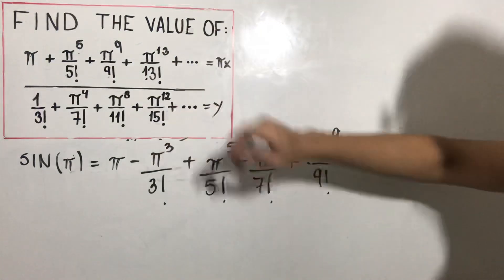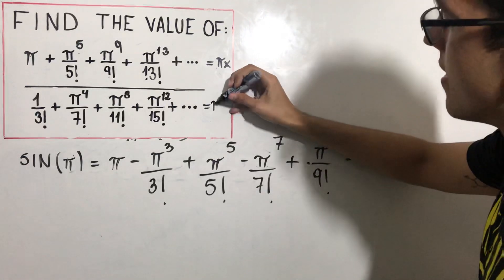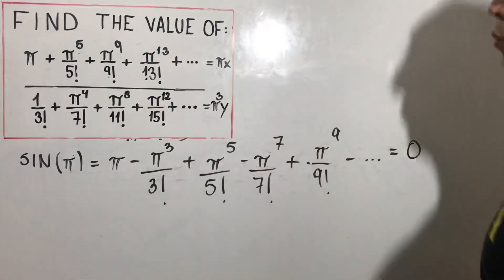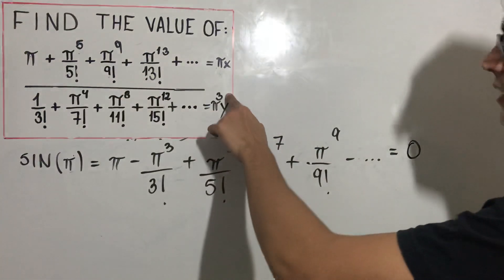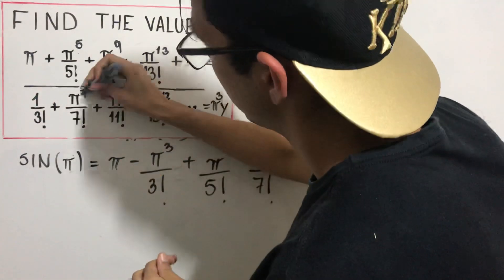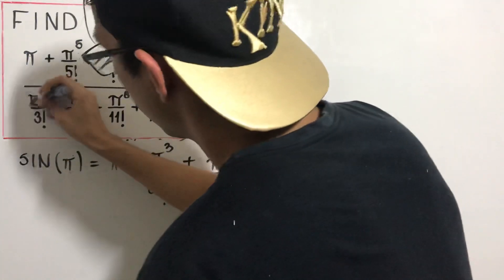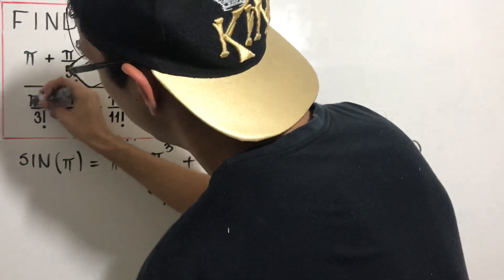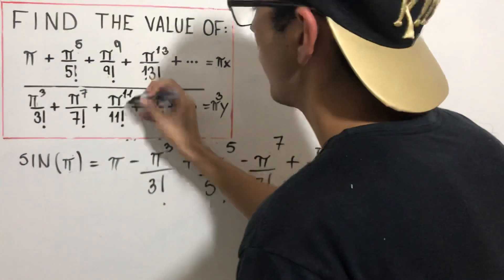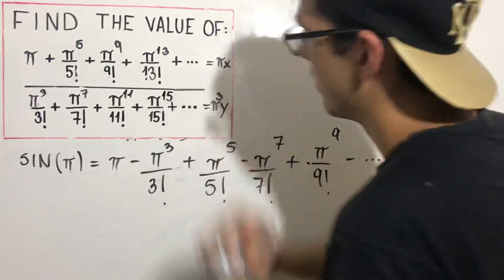I'm going to do the same thing in the second one. So I multiply by π to the third power. Why? Because this is going to be 4 plus 3, which is 7. But I can't forget this one: π³ here. Okay. π^11 and π^15. Nice.